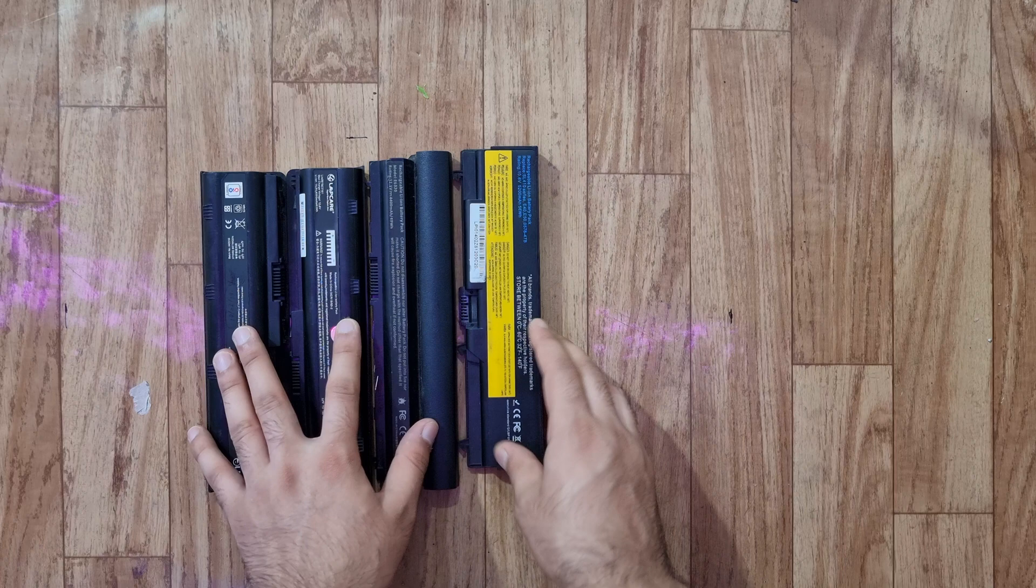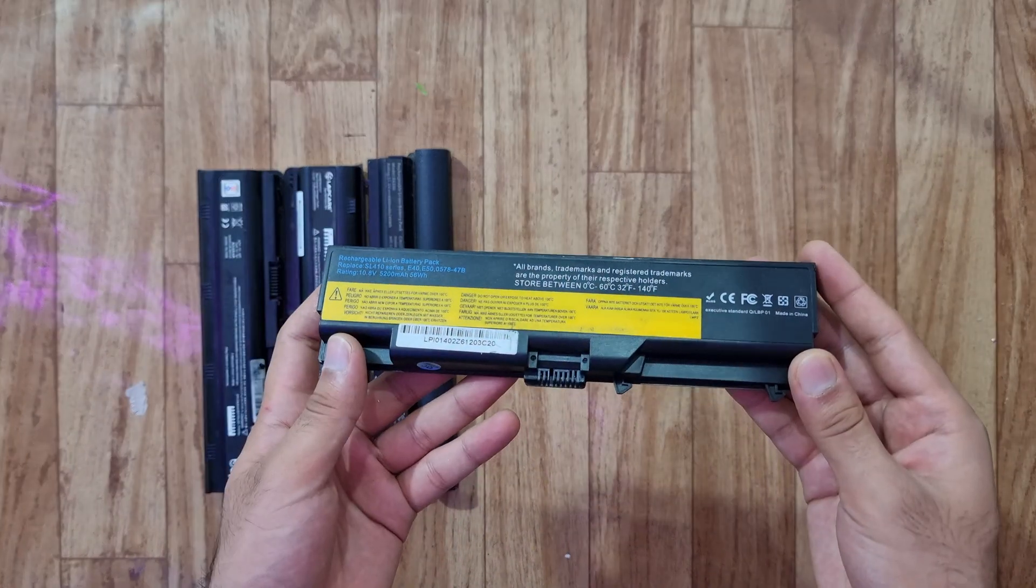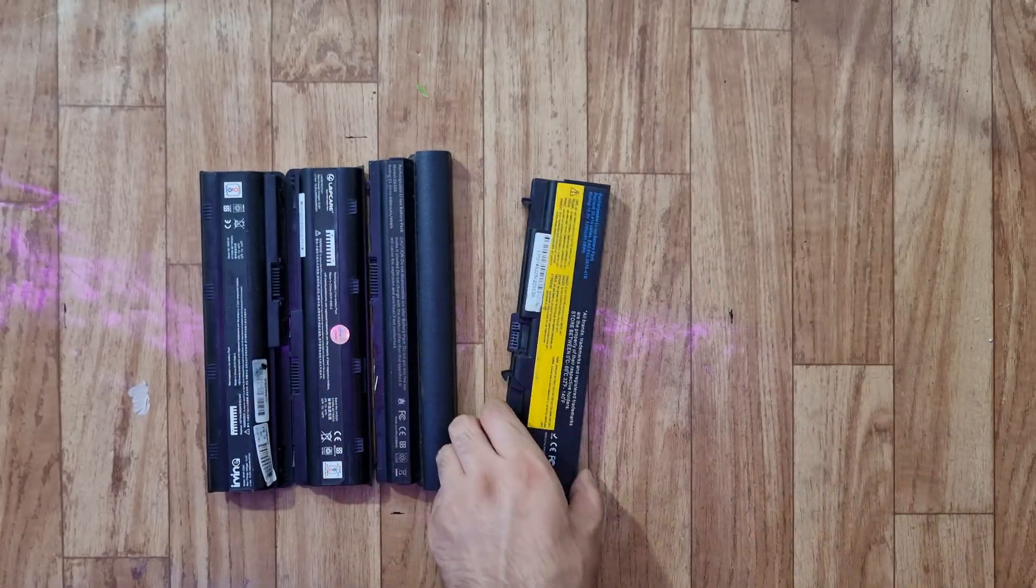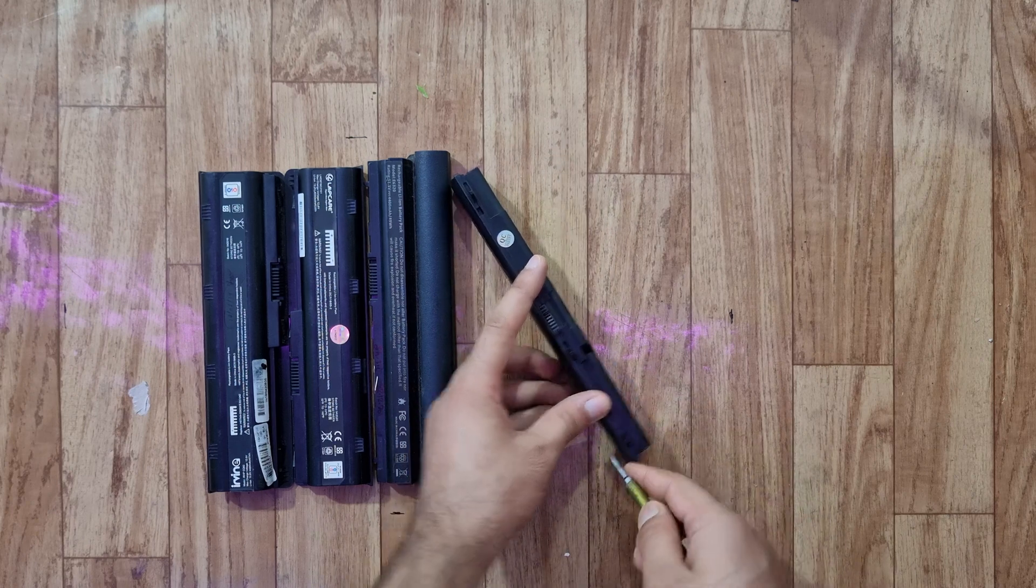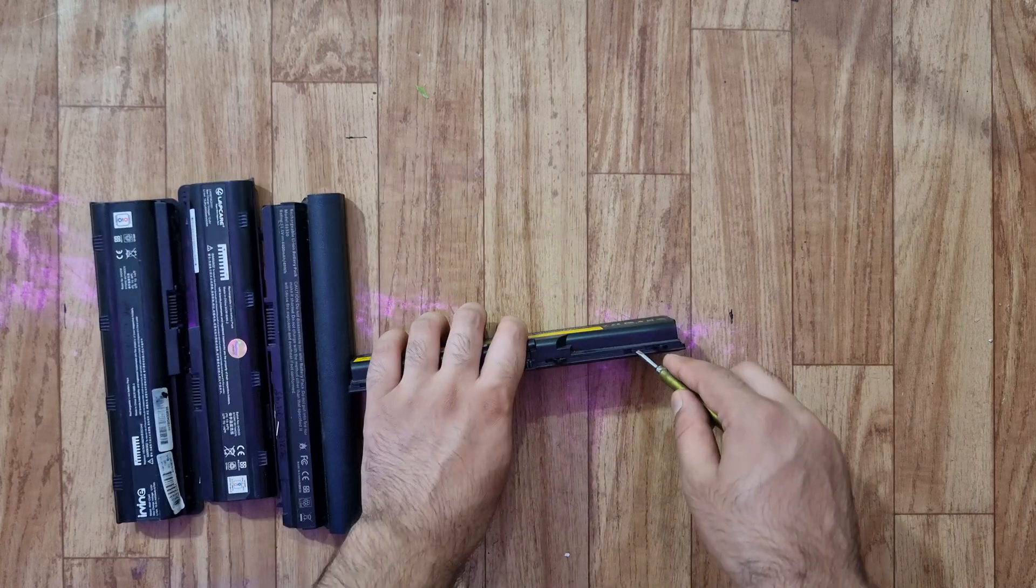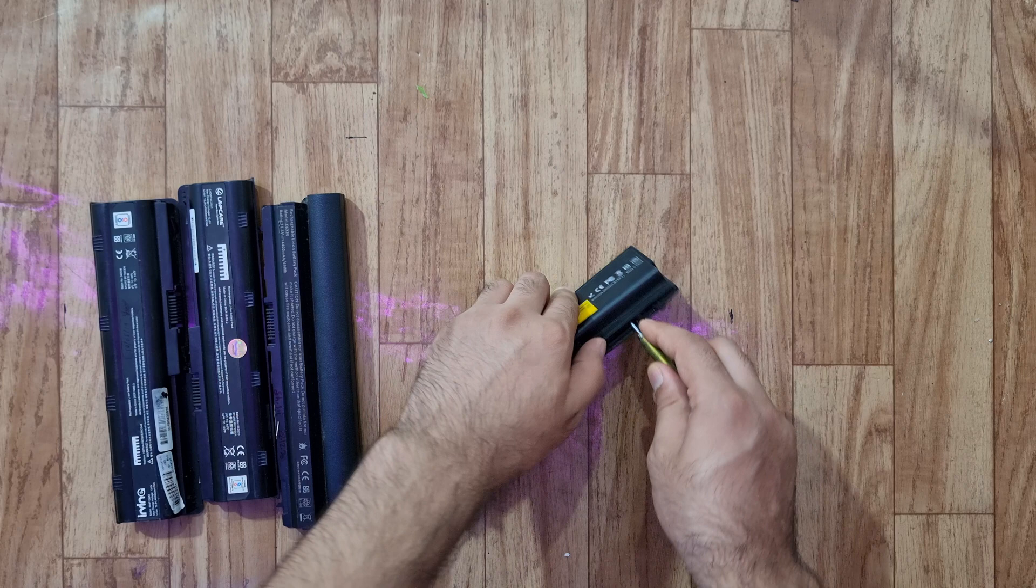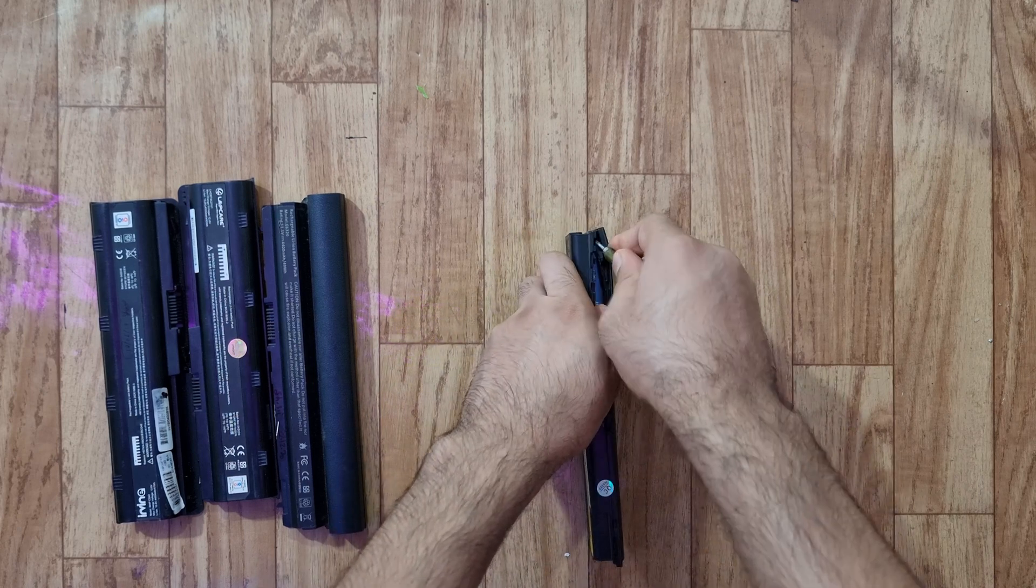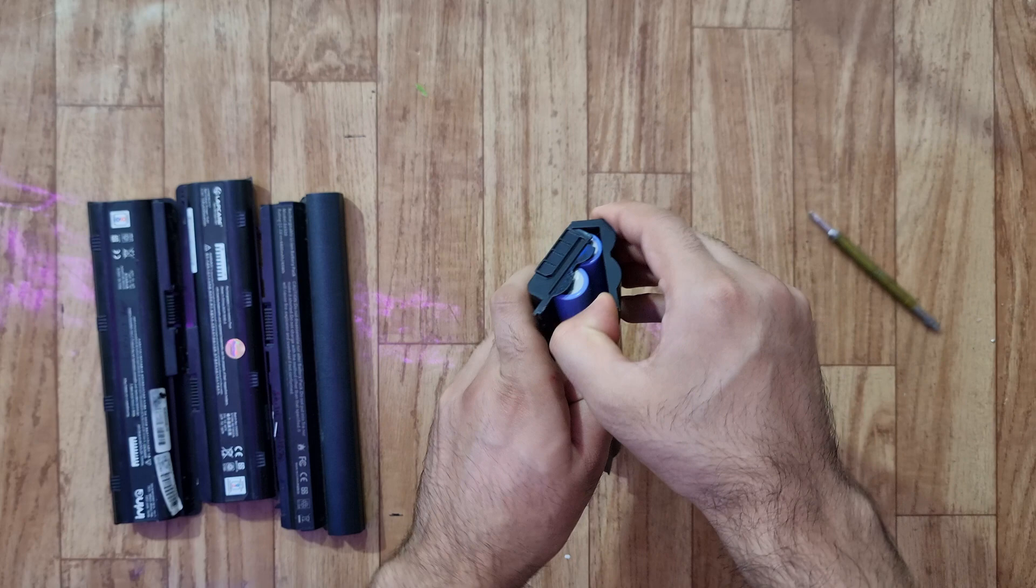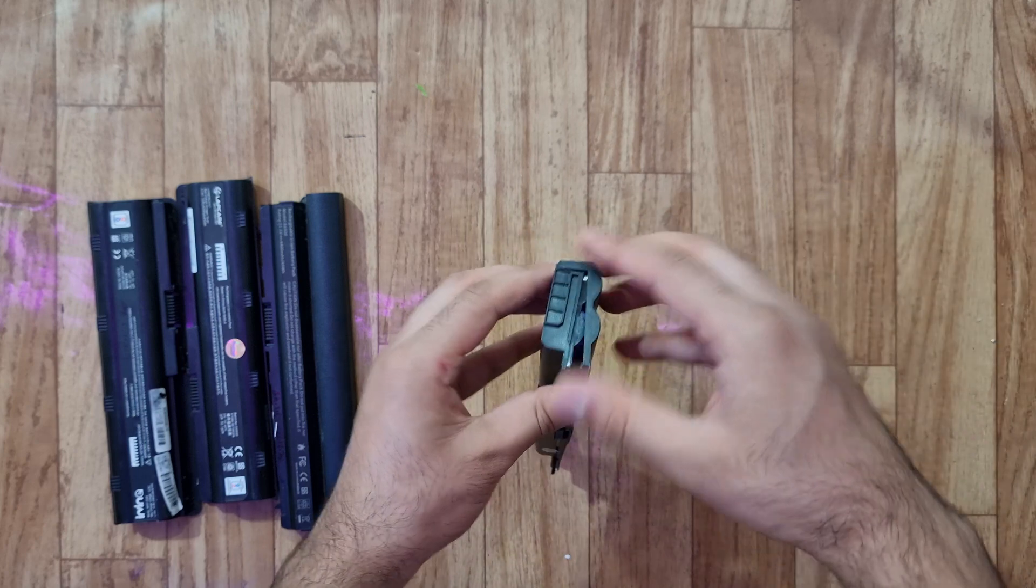Now we will start prying open these batteries. This is highly risky as if you punch through one of the lithium-ion cells it will easily catch fire, so you have to be very careful while opening these batteries. These are aftermarket batteries so they easily open. If these were original laptop batteries we would have to work much harder to pry these open.